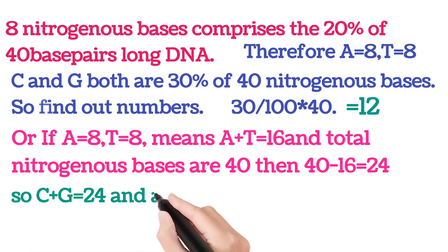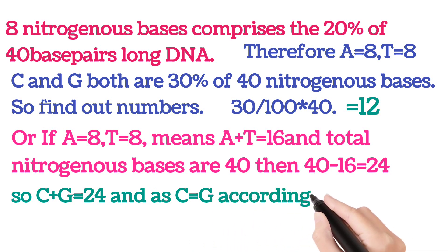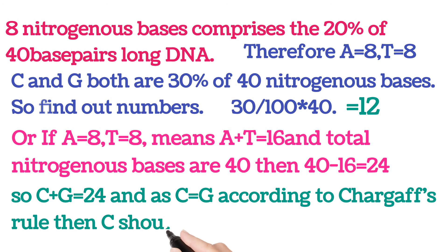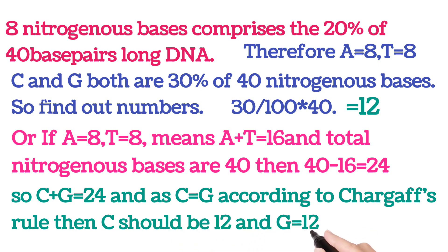Alternatively, you can find C and G by subtraction: A + T = 16, total = 40, so C + G = 40 − 16 = 24. Since C = G, each is 12. This confirms cytosine = 12 and guanine = 12. Question two is now fully solved.